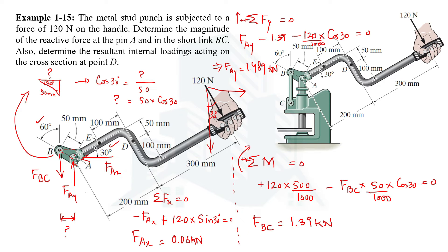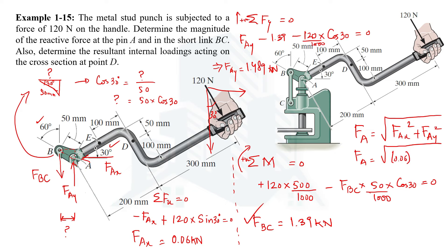The reactive force in short link BC has been calculated as 1.39 kilonewtons. For the reactive force at pin A, since we know the horizontal and vertical components, we use the resultant formula: FA = √(FAX² + FAY²) = √(0.06² + 1.489²). Calculating gives FA = 1.49 kilonewtons. This is the answer for the reactive force at pin A, and 1.39 kN is the answer for the force along member BC.